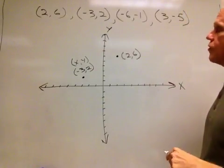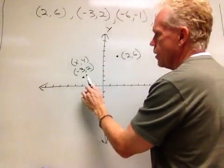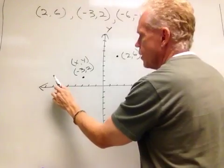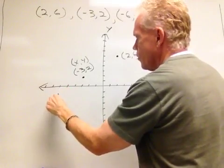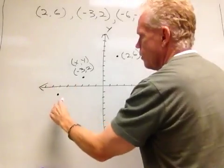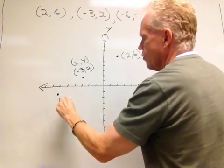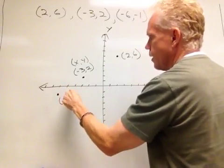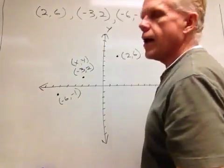And then we're going to go to negative 6, comma negative 1. So we come out here 1, 2, 3, 4, 5, 6, and down only one space from there. So that ordered pair, again, the x value going out was negative 6, and the y value going down was negative 1.